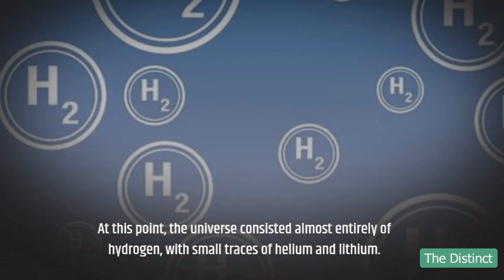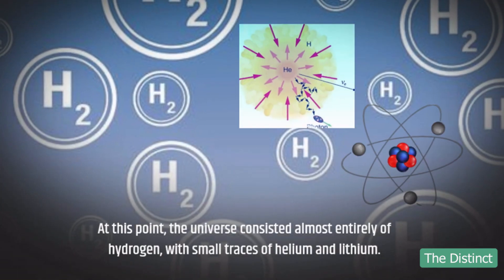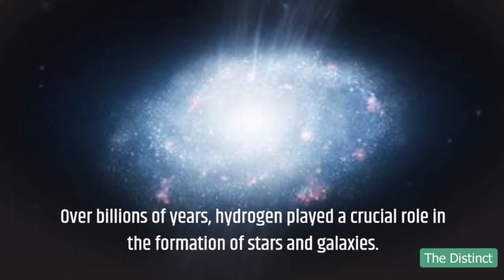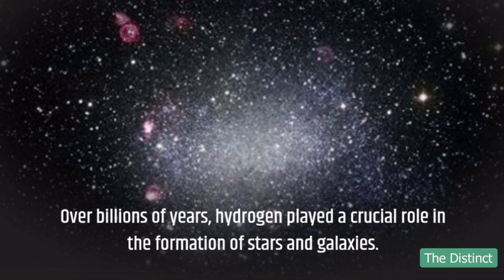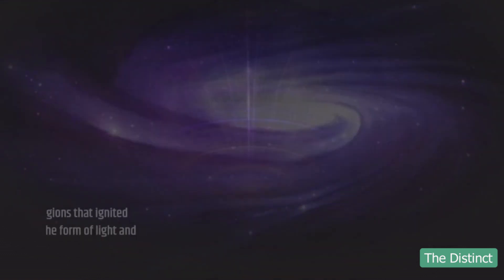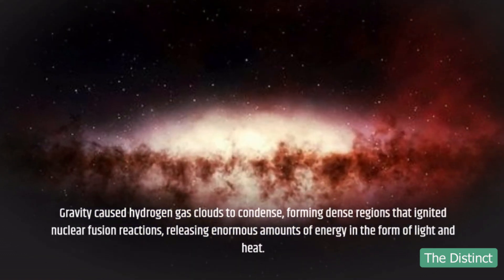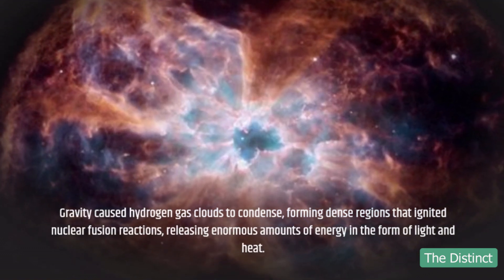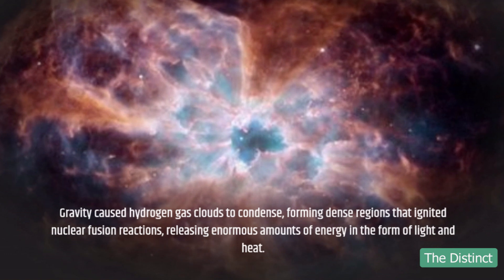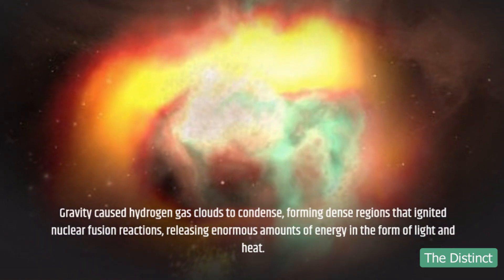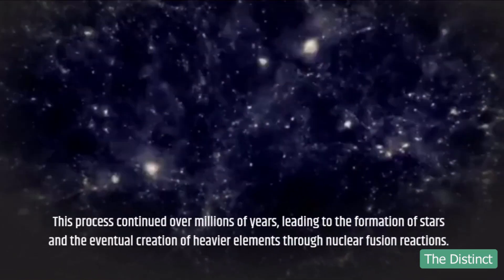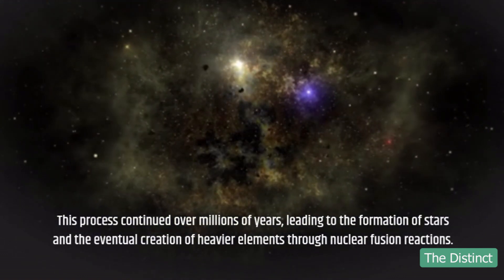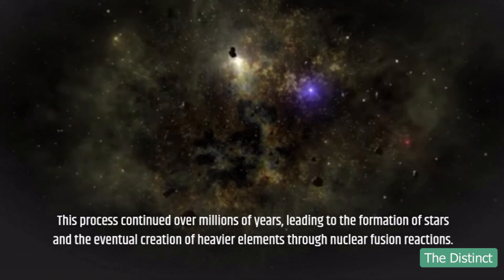At this point, the universe consisted almost entirely of hydrogen, with small traces of helium and lithium. Over billions of years, hydrogen played a crucial role in the formation of stars and galaxies. Gravity caused hydrogen gas clouds to condense, forming dense regions that ignited nuclear fusion reactions, releasing enormous amounts of energy in the form of light and heat. This process continued over millions of years, leading to the formation of stars and the eventual creation of heavier elements through nuclear fusion reactions.